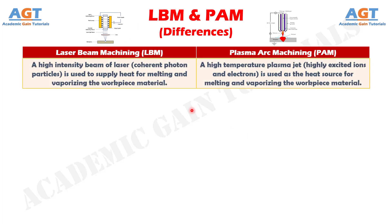Difference number 1: In Laser Beam Machining, a high intensity beam of laser — coherent photon particles — is used to supply heat for melting and vaporizing the workpiece material, whereas in Plasma Arc Machining, a high temperature plasma jet — highly excited ions and electrons — is used as the heat source for melting and vaporizing the workpiece material.